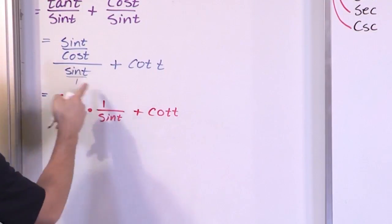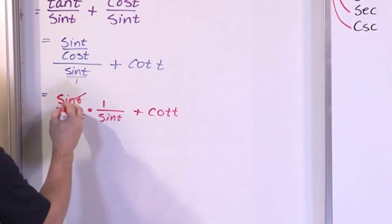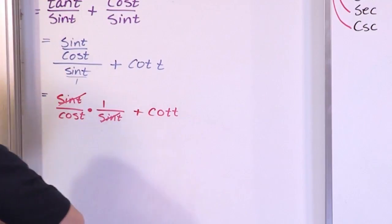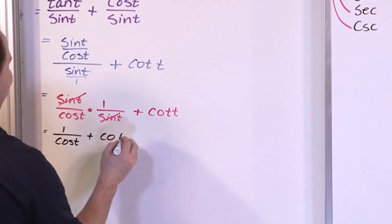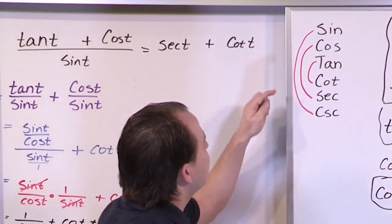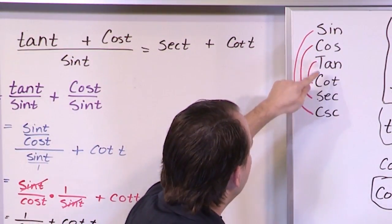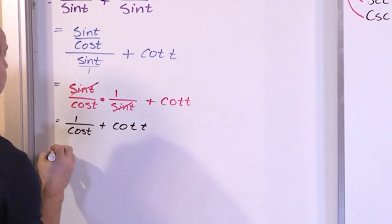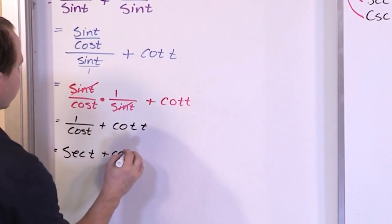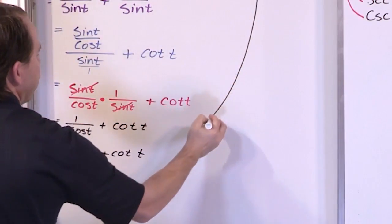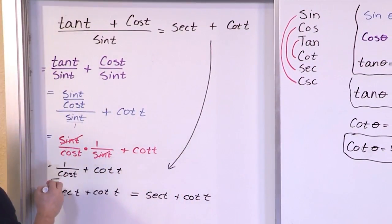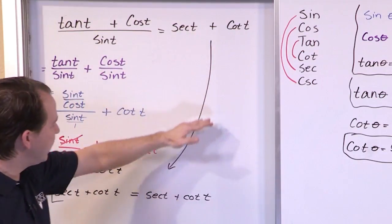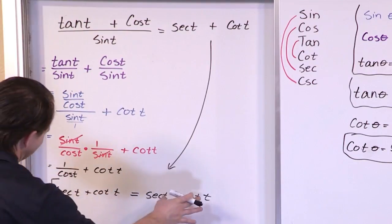Sine of t divided by sine of t cancels, leaving 1 over cosine of t, plus cotangent of t. From the trig rainbow, 1 over cosine equals secant. So we have secant of t plus cotangent of t — exactly equal to what we were given on the right-hand side. The final line in every trig identity problem should show the left-hand side manipulated down and the right-hand side carried down, so you can clearly see left equals right.